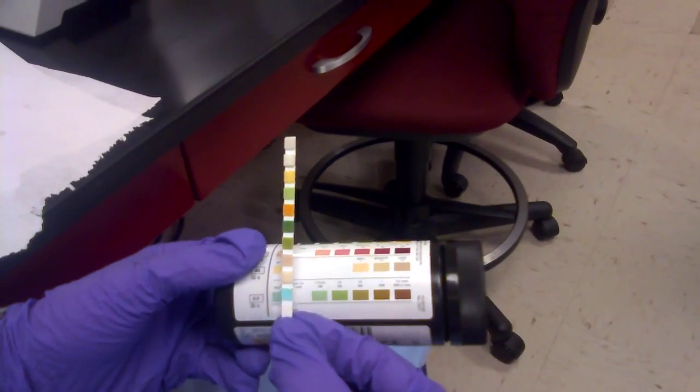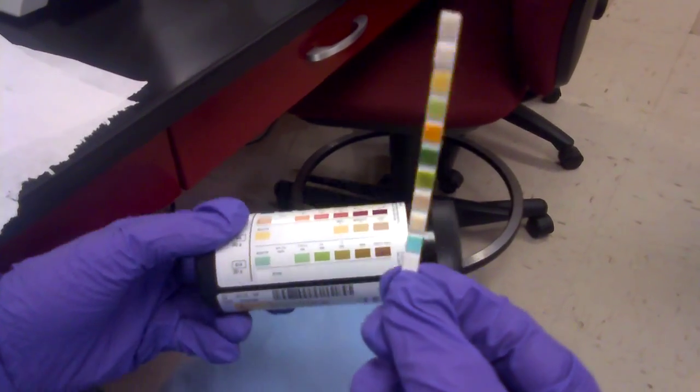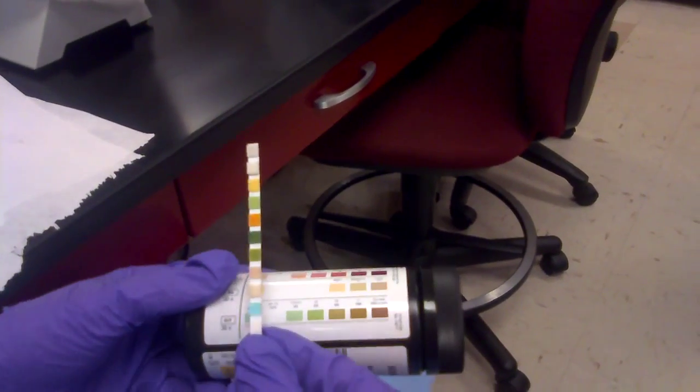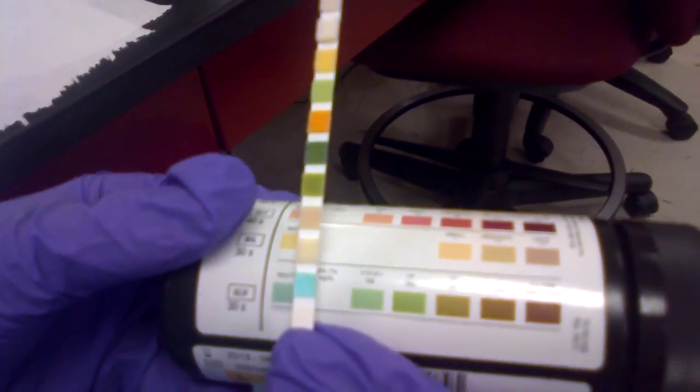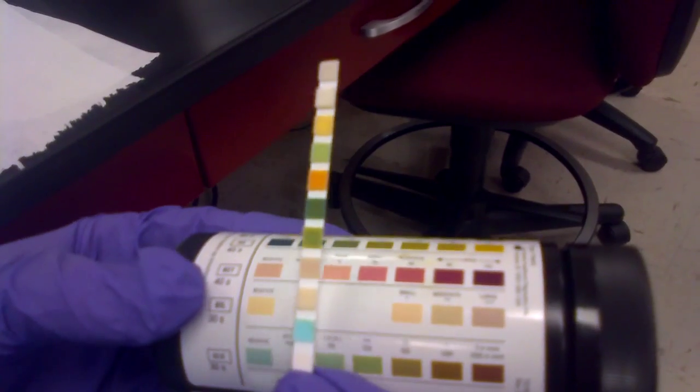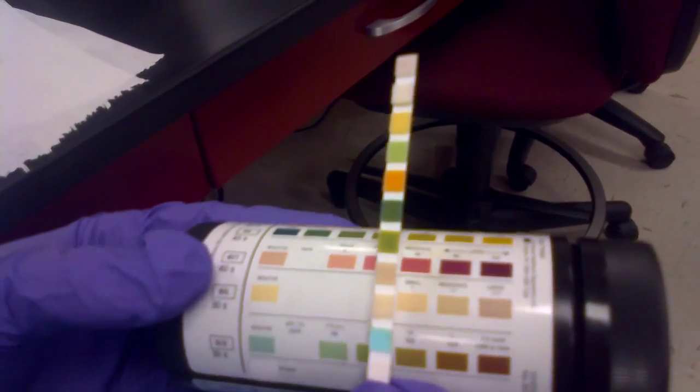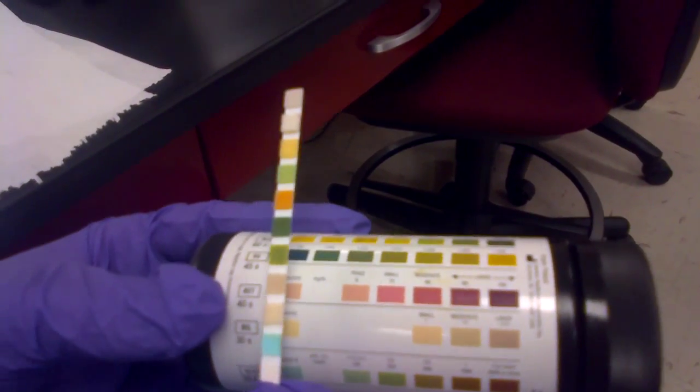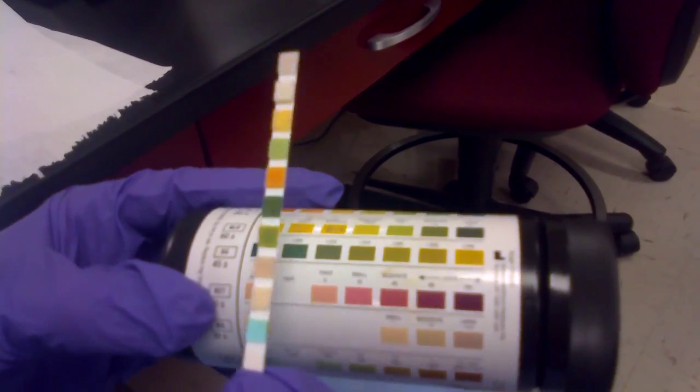To compare our results, we must match the colors from the dipstick to the actual bottle. The first test is for glucose. Here we have a negative glucose reading. Second is bilirubin. We have a small amount of bilirubin. Next is ketones. We have a negative color for ketones.